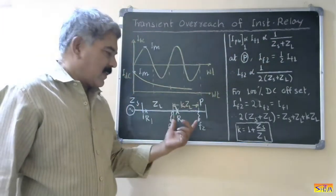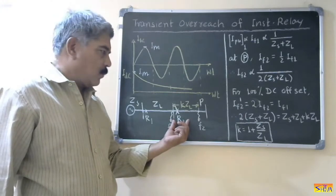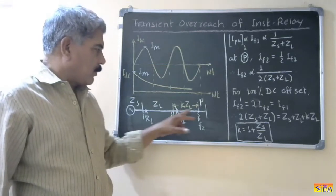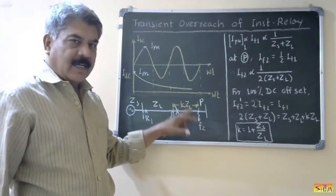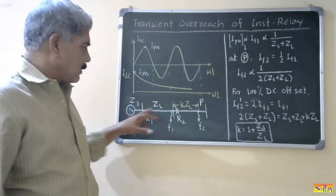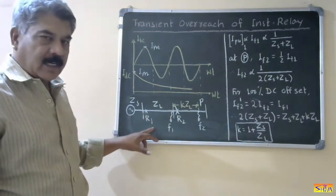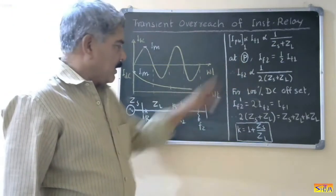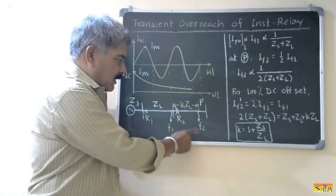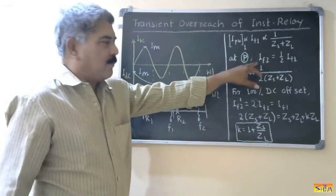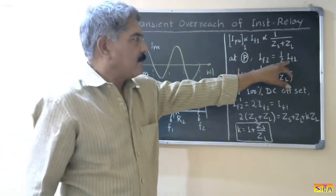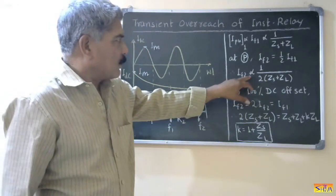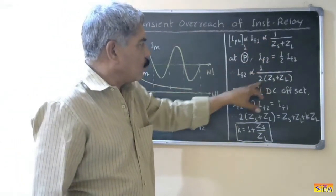In the next section covered by relay R2, consider a point P where the impedance from the relay to that point is K times ZL. ZL is the impedance of the first line protected by relay R1. At point P, if fault F2 takes place, then fault current IF2 is exactly half of fault current IF1. So IF2 is proportional to 1 upon 2 times ZS plus ZL.